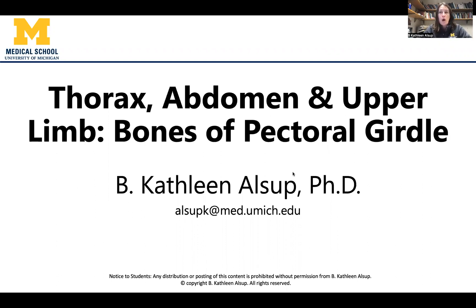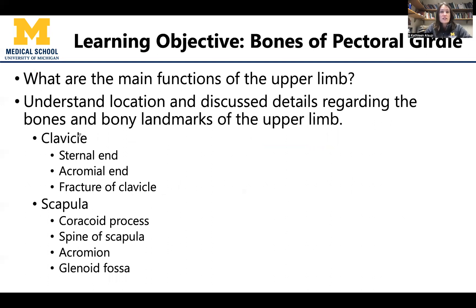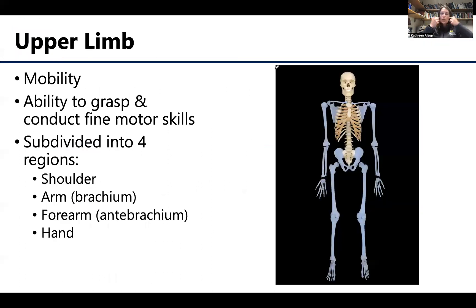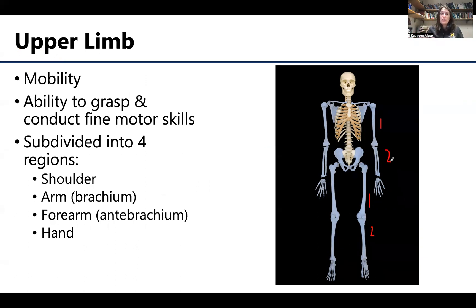Let's start with the most proximal bones of the upper limb — the bones of the pectoral girdle. We're really focusing on two bones. Thinking about the upper limb in comparison to the lower limb, there are a lot of similarities: more proximal portions generally have one bone, two bones distally. So there are similarities between the upper and lower limbs, but also some pretty important differences.